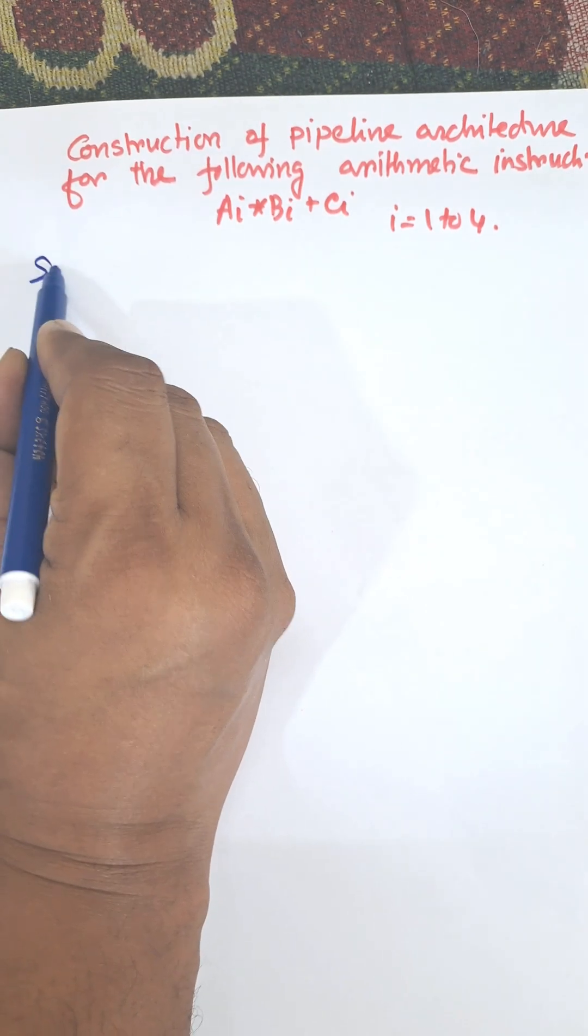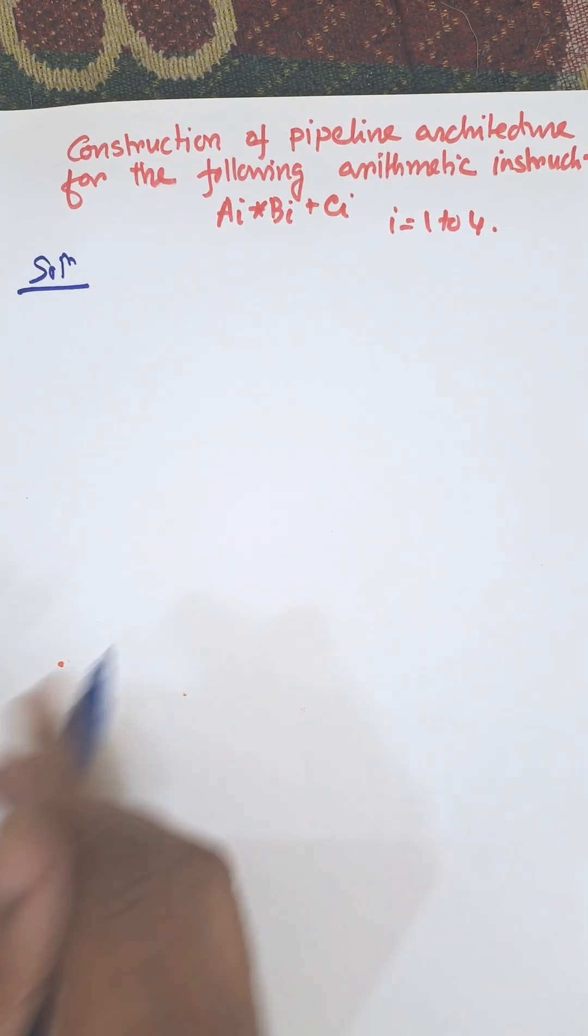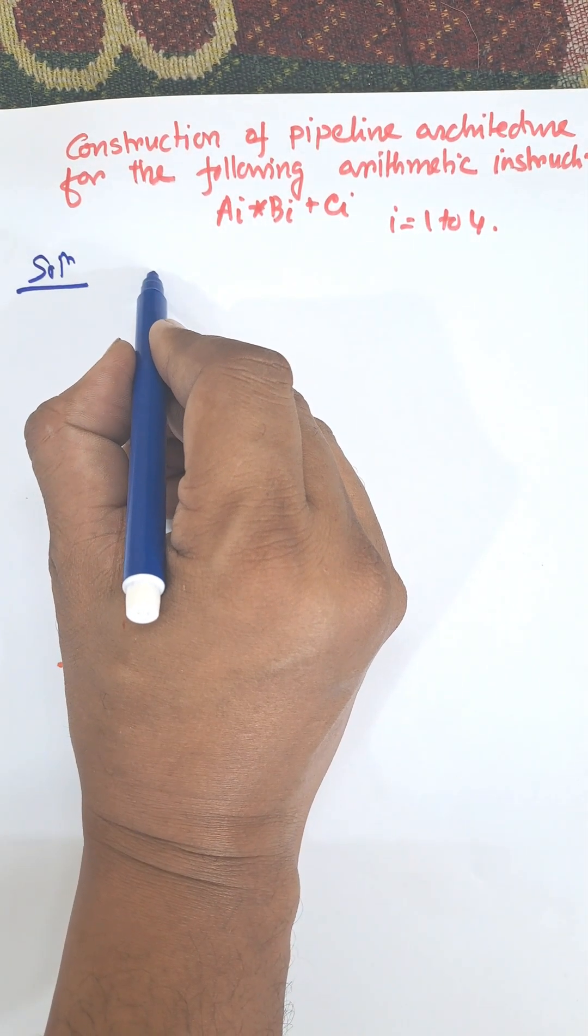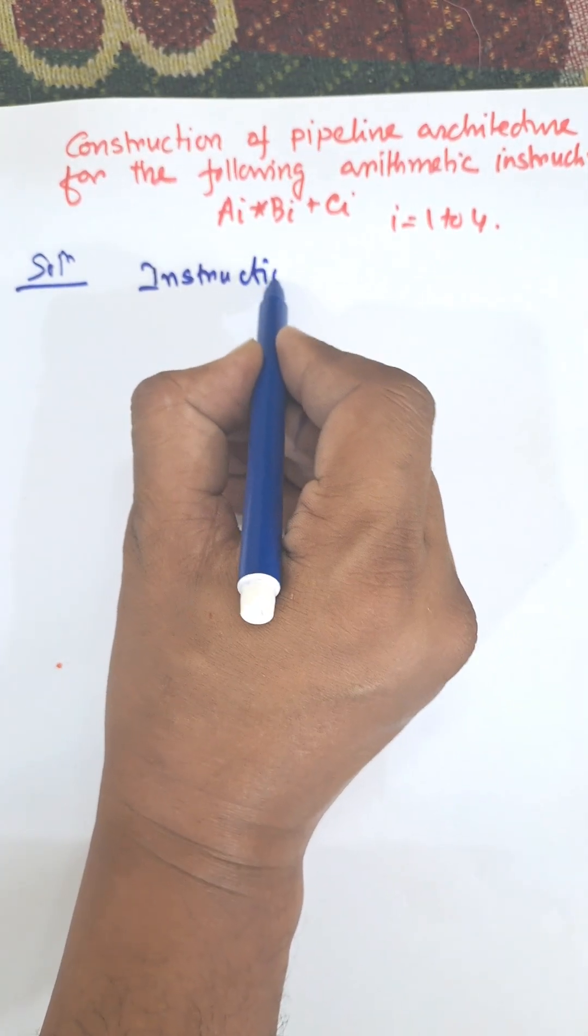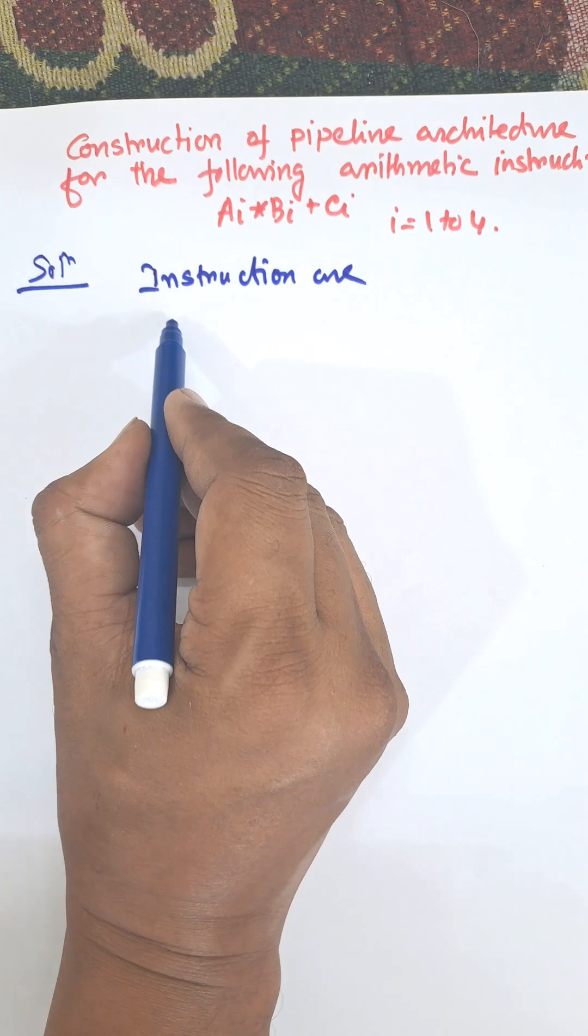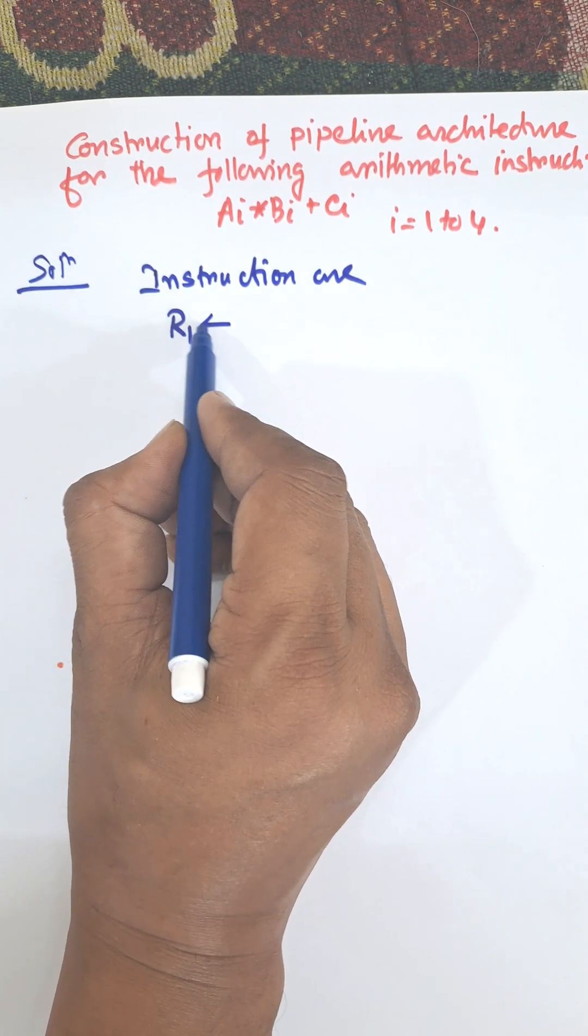First of all, we need to find the total number of instructions. The instructions are: first, we need to load ai into the r1 register.